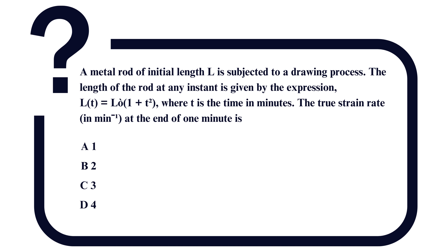So, this is a drawing process question in which there is a rod with initial length L0. At a particular instant, the rod's length is given by the expression Lt = L0 into (1 + t²), and the question asks for the true strain rate in per minute at the end of one minute. The basic difference between engineering strain and true strain is: engineering strain is change in length divided by original length, but in true strain we use the instantaneous length.